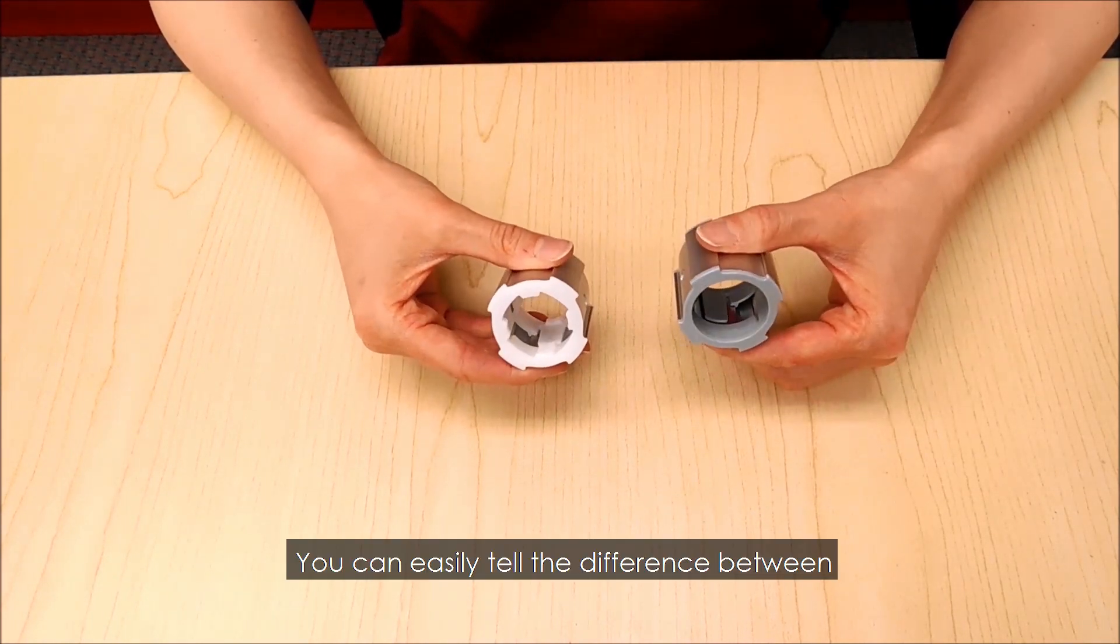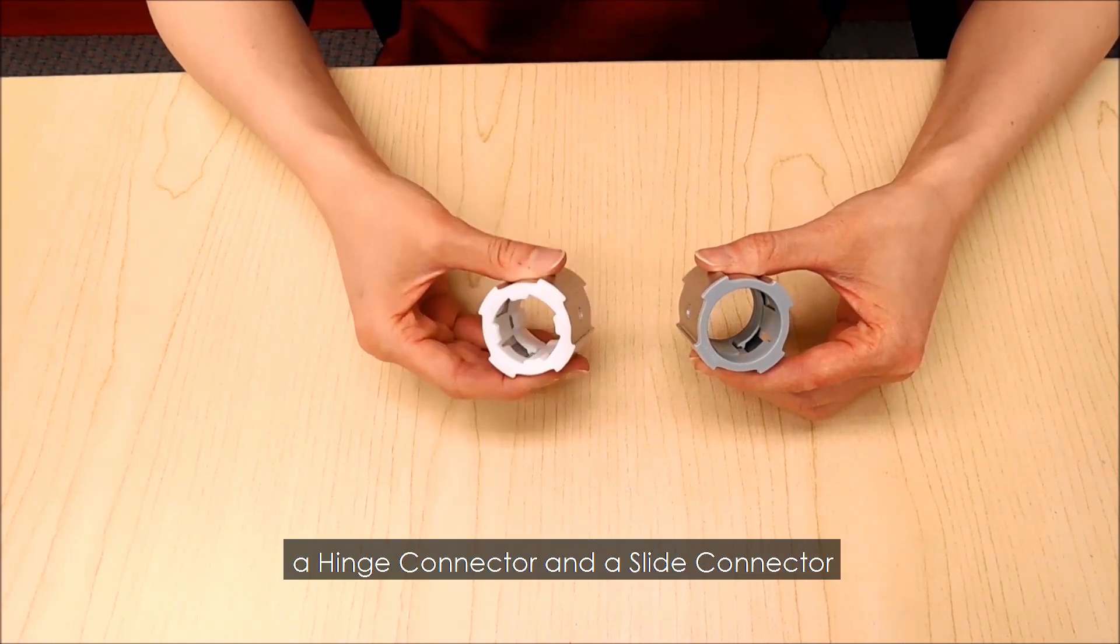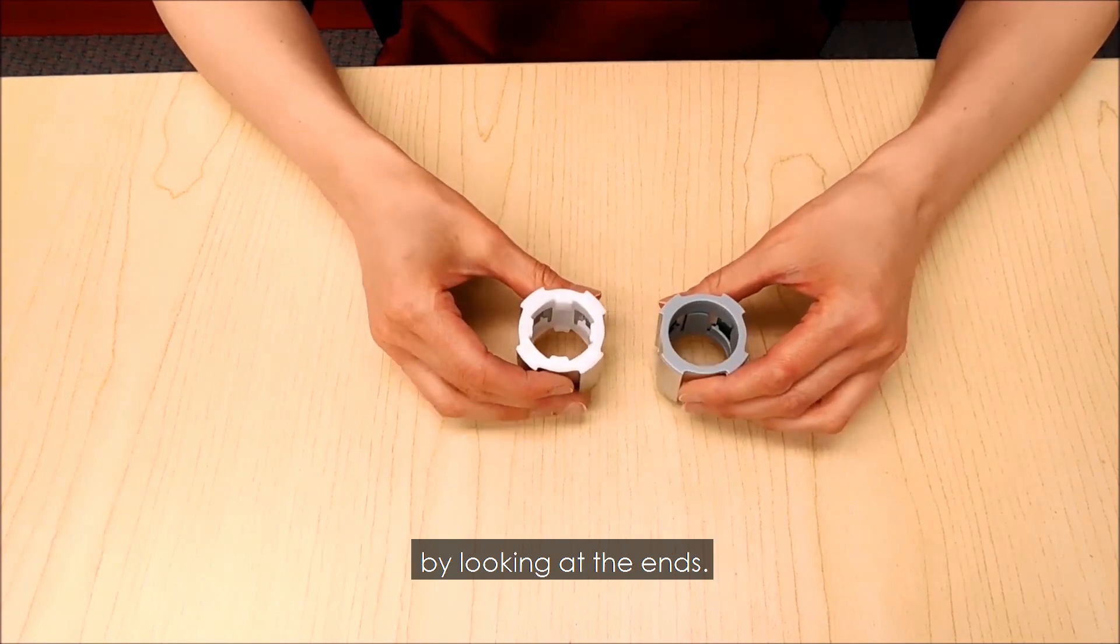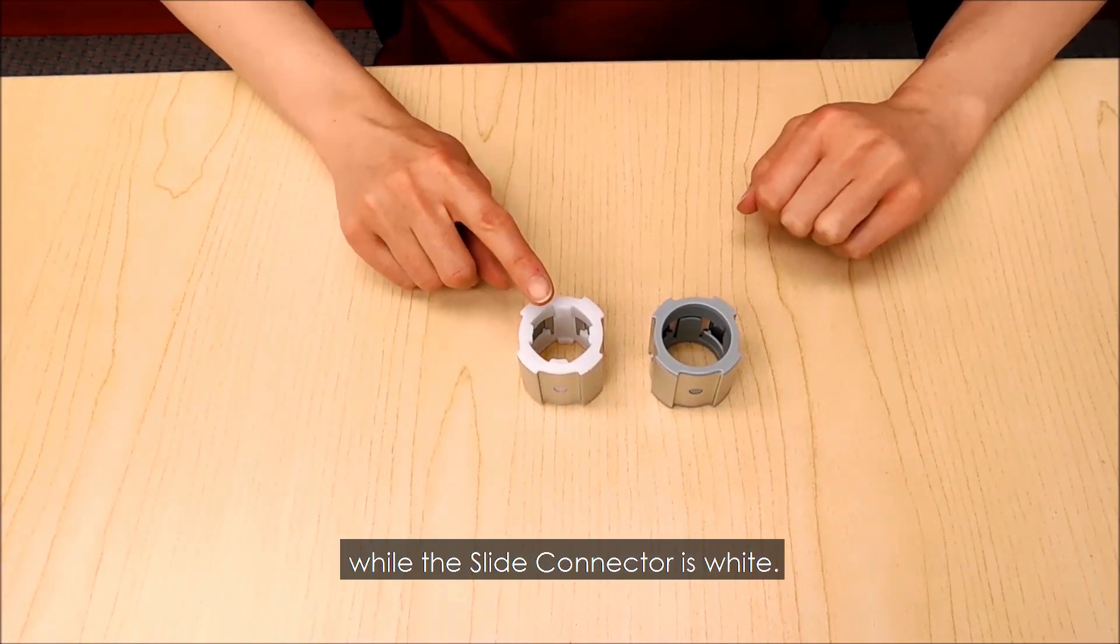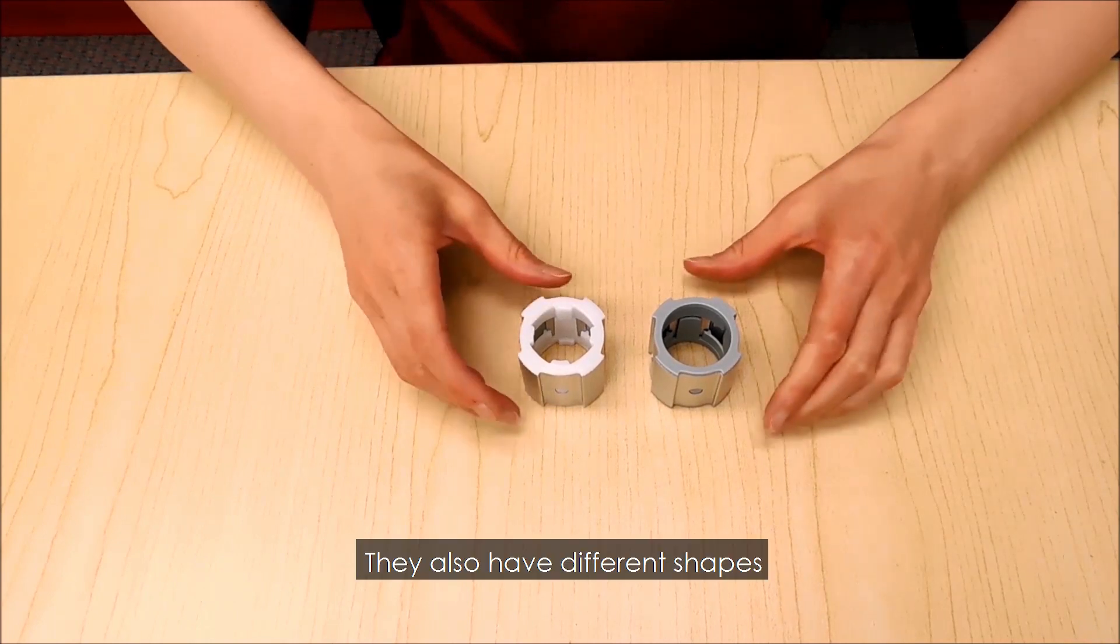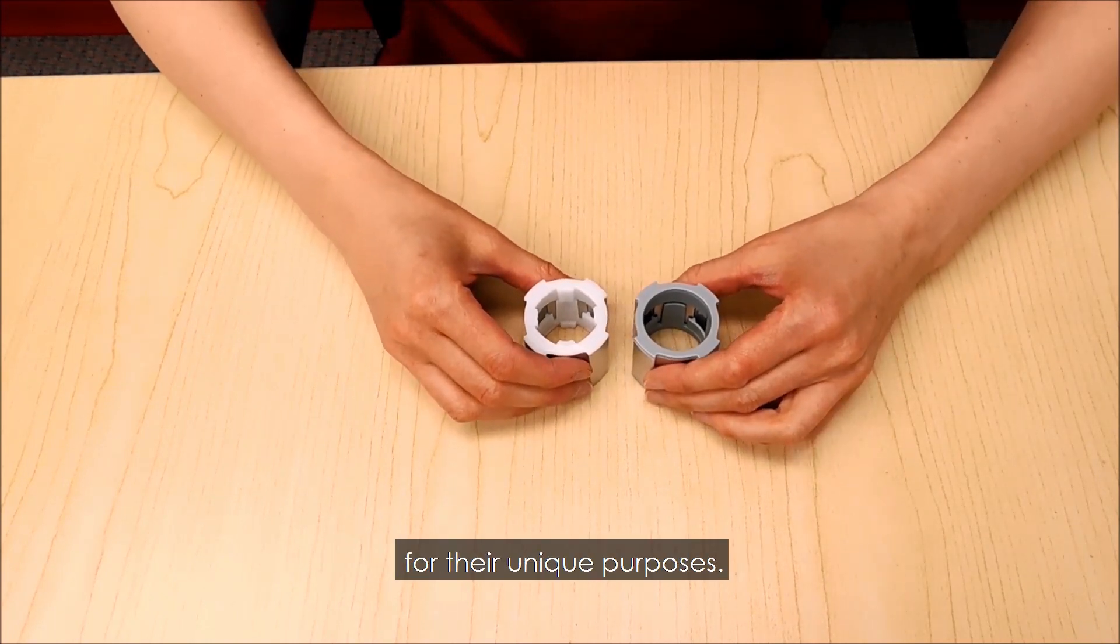You can easily tell the difference between a hinge connector and a slide connector by looking at the ends. The hinge connector is gray while the slide connector is white. They also have different shapes for their unique purposes.